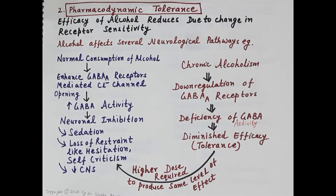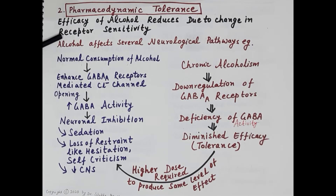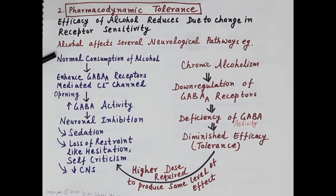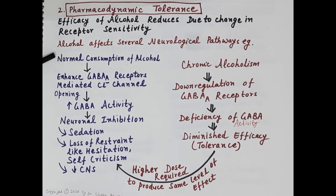Now we will talk about pharmacodynamic tolerance. The efficacy or effect of alcohol on the body reduces due to changes in receptor sensitivity, and this change in receptor sensitivity is due to repeated consumption of alcohol. Alcohol affects several neurological pathways, like the GABAergic pathway, serotonergic pathway, glutamate, opiate, and dopamine pathways. We will discuss how tolerance develops because of receptor sensitivity changes, taking the example of GABA-A receptors.